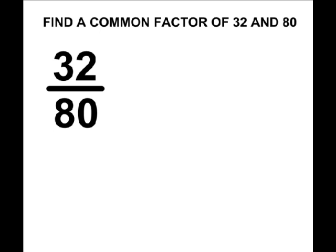First, you must find a common factor of the numerator and the denominator of the given fraction. In this case, a common factor of 32 and 80 is 8.